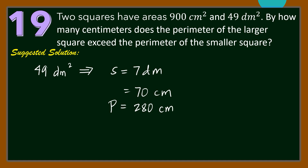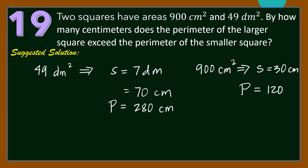For the square with area 900 squared centimeters, each side is 30 centimeters long, so the perimeter is 30 times 4, that is 120 centimeters. Hence, the difference between their perimeters is 280 minus 120, which is equal to 160 centimeters.